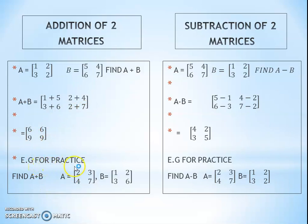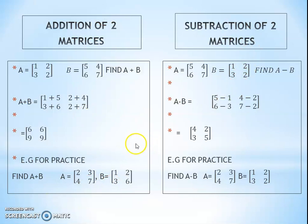I give the following example for your practice: find A plus B where A equals [2, 3; 4, 7] and B equals [1, 2; 3, 6]. Be careful — in the addition, you must verify that each and every entry is added with the corresponding entries of that row and column.